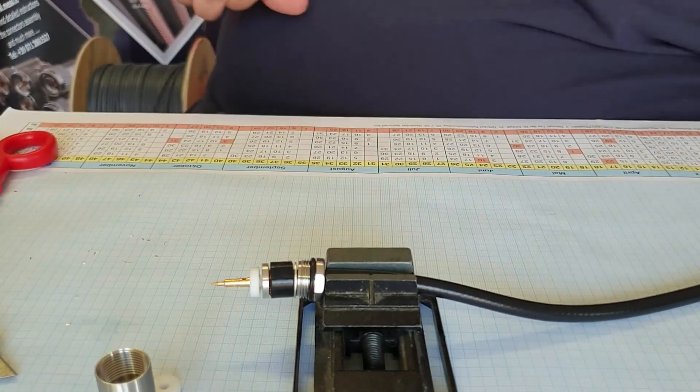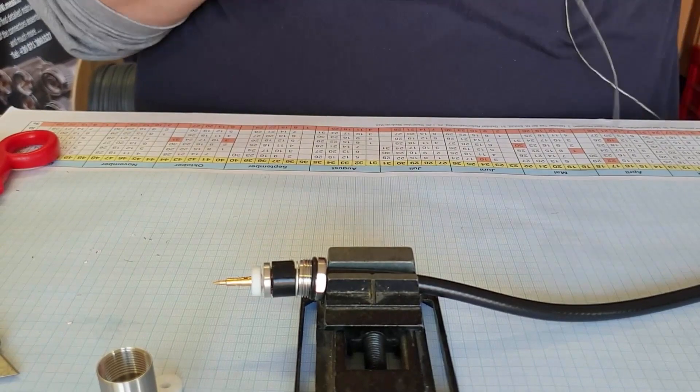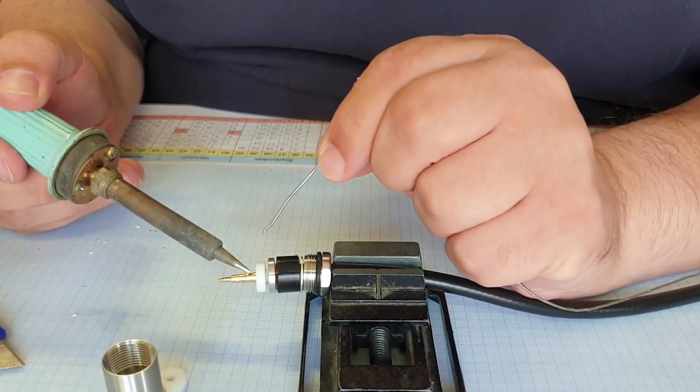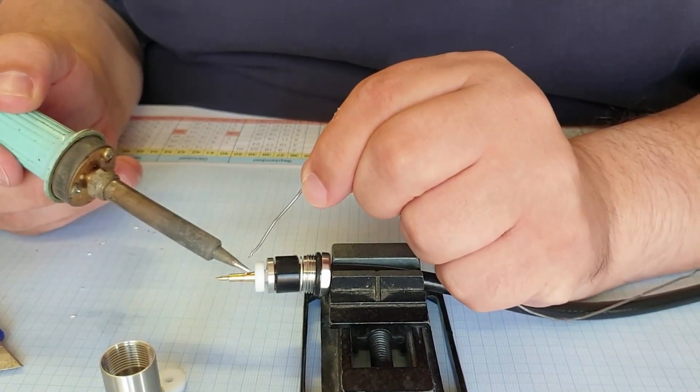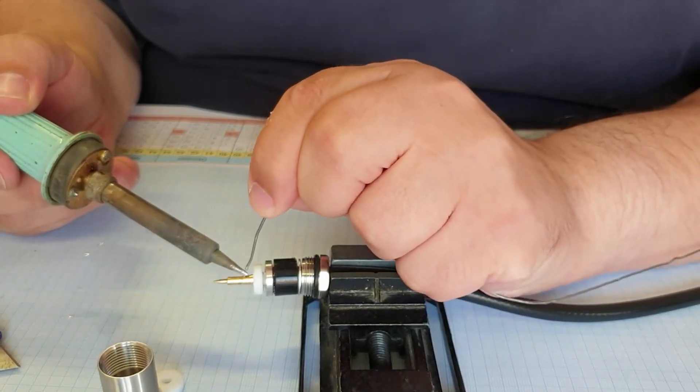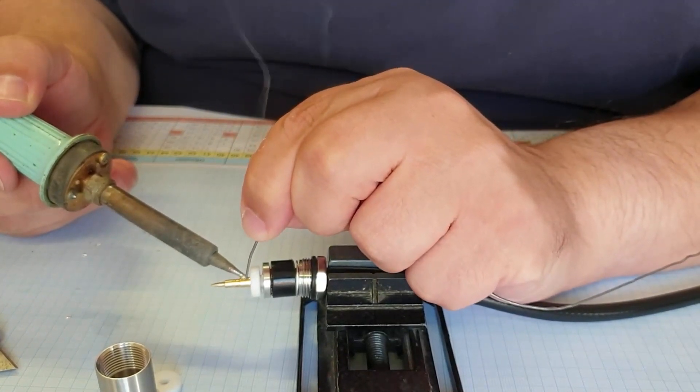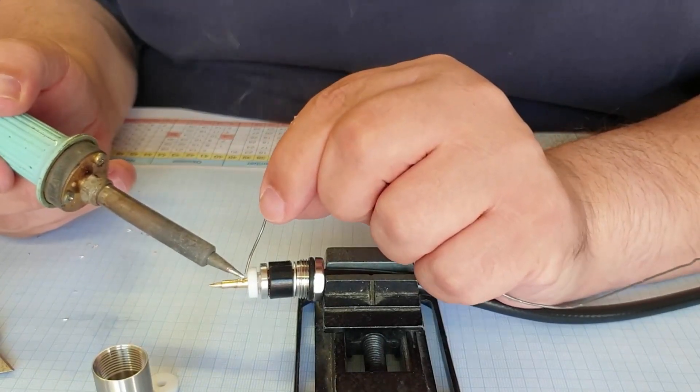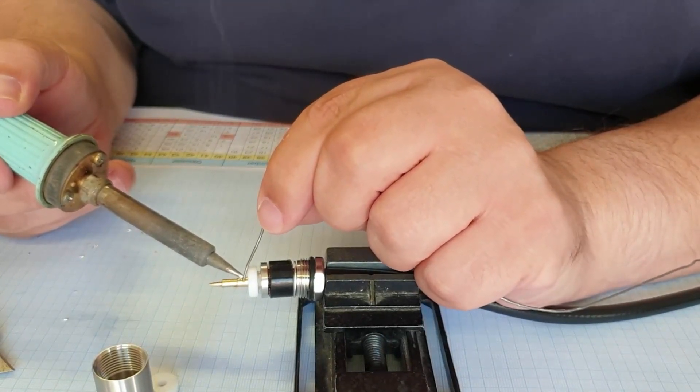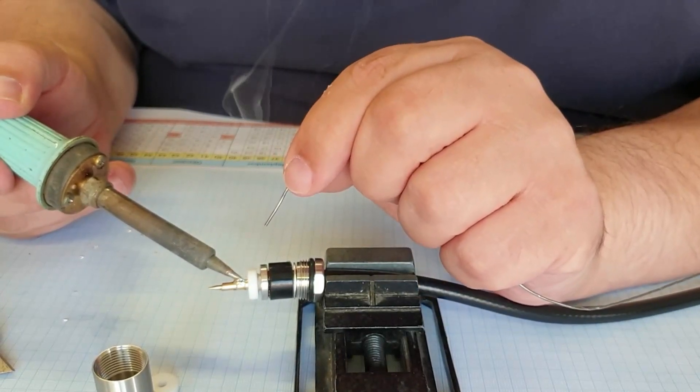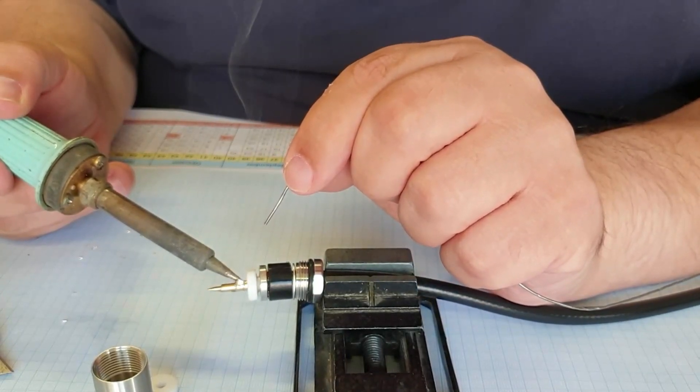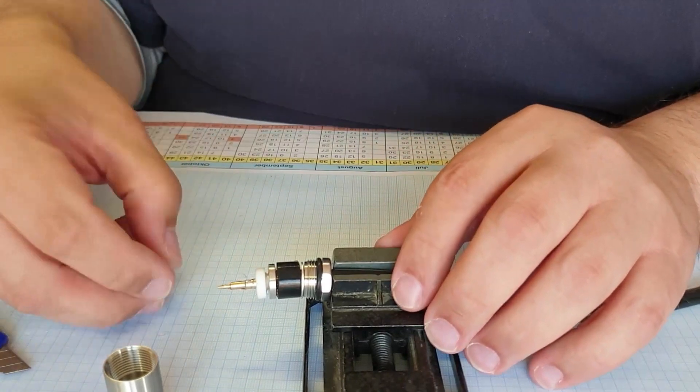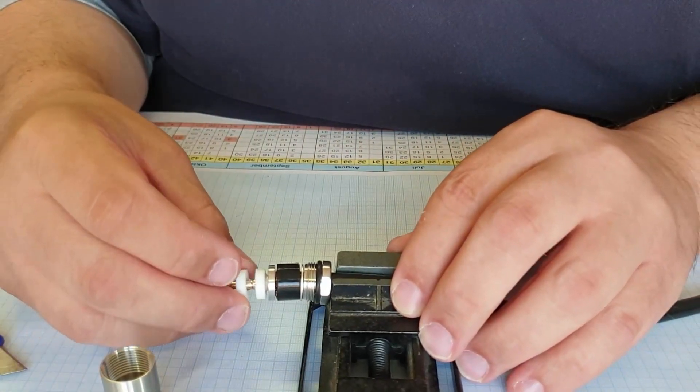And then we start soldering the inner conductor. So that means we make it a little bit hot. And now I hope you can see that the lead is going into the inner connector.